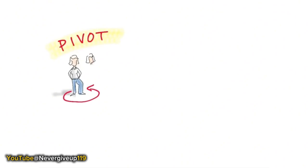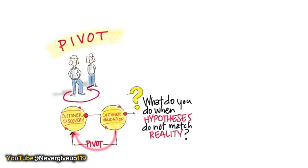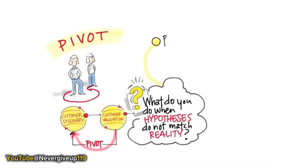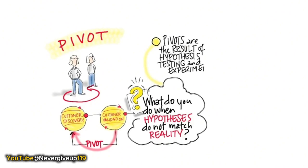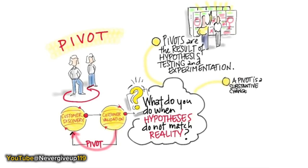One of the interesting observations about customer development is the notion of the pivot. 'Pivot' was a term coined by my best student, Eric Ries, when he noticed the arrow between customer validation and customer discovery and gave it a name. A pivot asks: what do you do when your hypotheses don't meet reality? What we now know is that instead of firing executives when our business model doesn't match the real world, we fire the model. A pivot is a substantive change to one or more of the business model components.